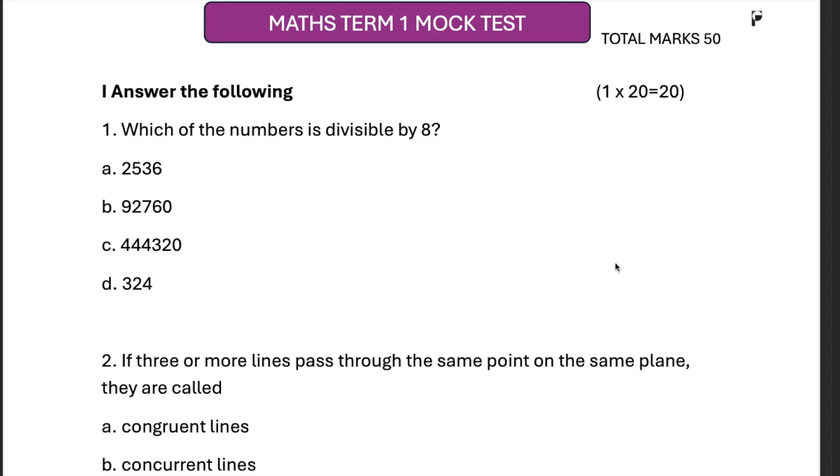For a number to be divisible by 8, the last three digits should be divisible by 8. So that would be option number C, 320 is divisible by 8.